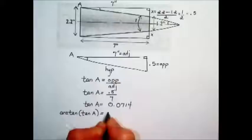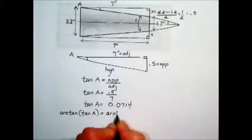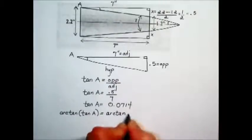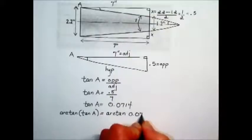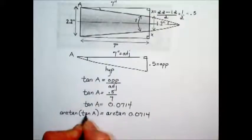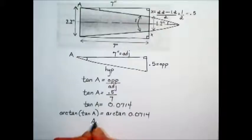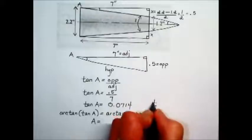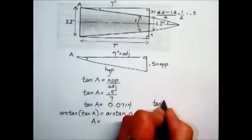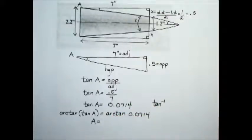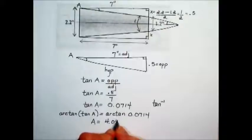To maintain equality, we also have to take the arctangent of the right-hand side. The arctangent of tangent cancels out leaving A, and using your calculator, arctangent often is symbolized with tangent to the negative 1, gives us a value of 4.09.